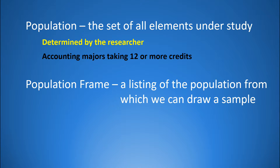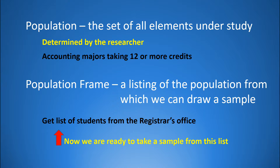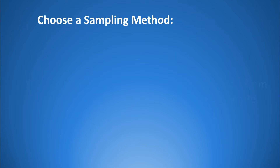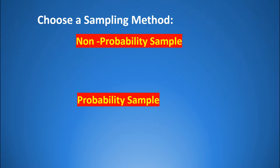A frame is a listing of the population from which we can draw a sample. So if the population is all full-time undergraduate accounting students, then a frame would be a listing of all those students, which we can get from the registrar's office. Once we have the list — called a frame — we can draw a sample and choose a sampling method. We must first decide whether to use a non-probability method or a probability method.